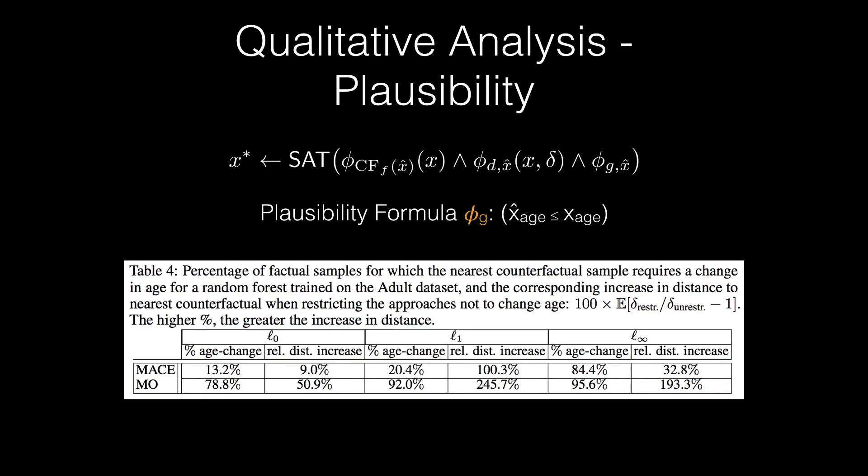To demonstrate that we can handle additional plausibility constraints, we added the constraint of non-decreasing age, and we observed a distance increase for both methods, but significantly more for MO than MACE. This suggests that counterfactual explanations found with MACE may assist in qualitatively ascertaining other desiderata, such as fairness.